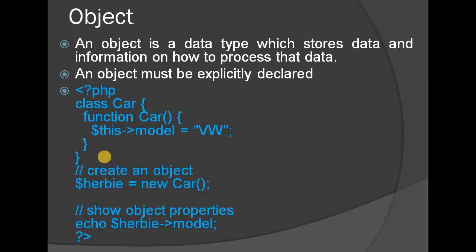Next is the user-defined type: object. An object stores values along with information on how to process that data. An object is created using a class. For example, an object is created as a new Car, and values like the model exist within it.